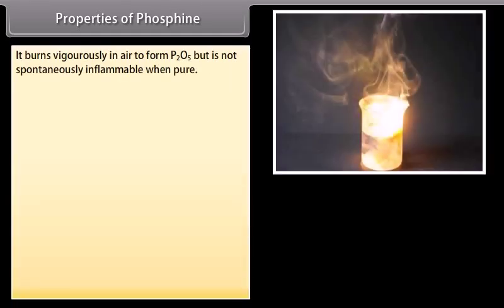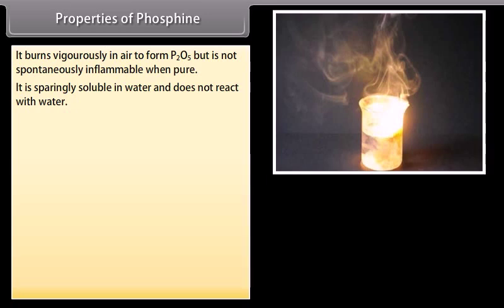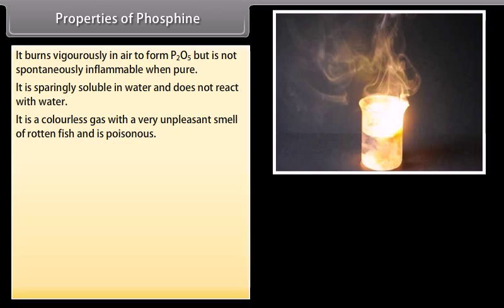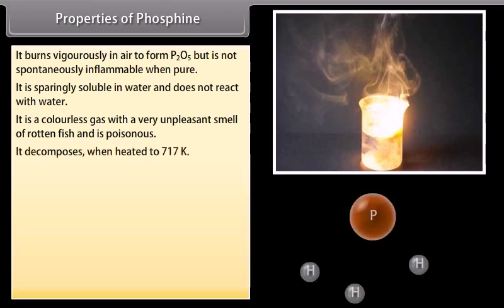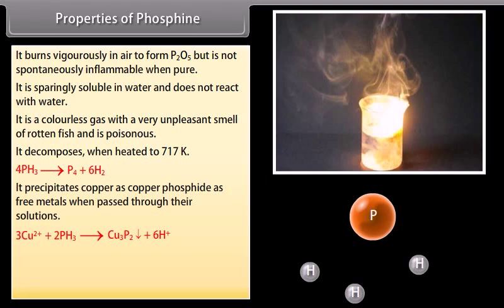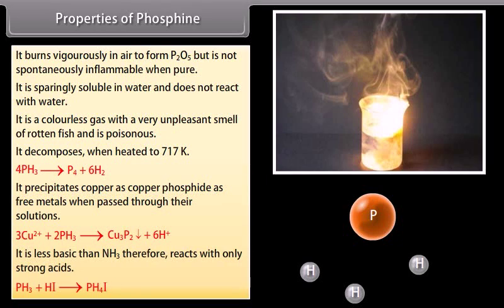Phosphine burns vigorously in air to form P2O5 but is not spontaneously inflammable when pure. It is sparingly soluble in water and does not react with it. It is a colorless gas with a very unpleasant smell of rotten fish and is poisonous. It decomposes when heated to 717 Kelvin. It precipitates copper as copper phosphide when passed through copper salt solutions. It is less basic than NH3 and therefore reacts only with strong acids.